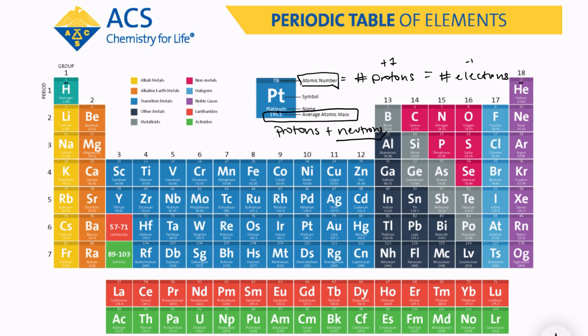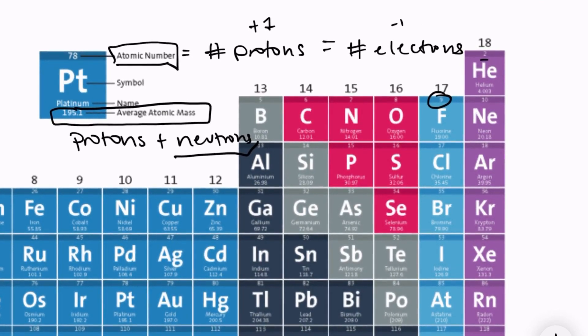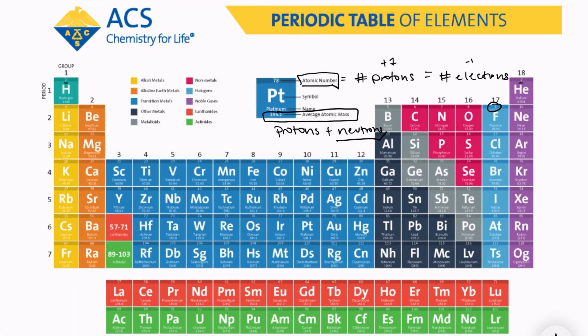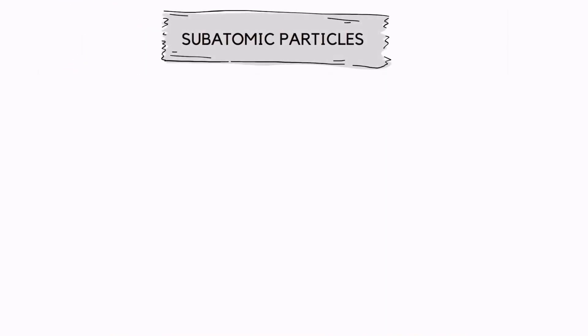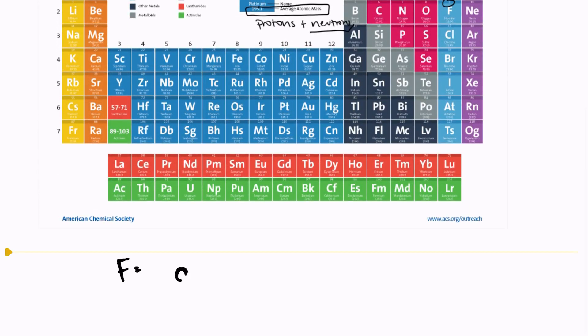So let's practice. Let's look at something like fluorine. Fluorine has an atomic number of 9 and a mass of 19. So that means that fluorine has 9 protons because the atomic number is 9. We're looking at a neutral atom, that means there's no charge, so there has to also be 9 electrons.